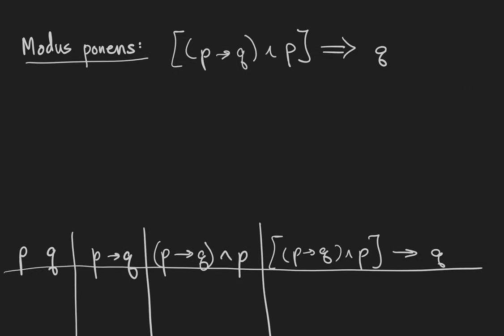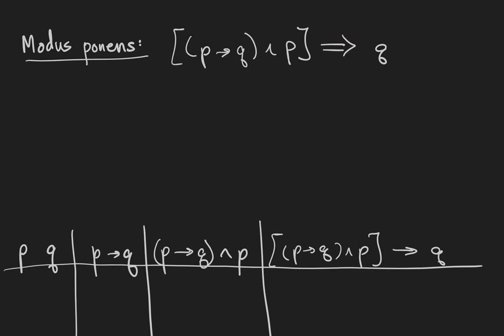So our first rule of inference here is going to be something called modus ponens, and it is a very common mathematical proof technique. Let's give an example of it. Let's have p implies q be the statement, if you do your homework, you will pass the test. Let's have p be the statement, you do your homework.